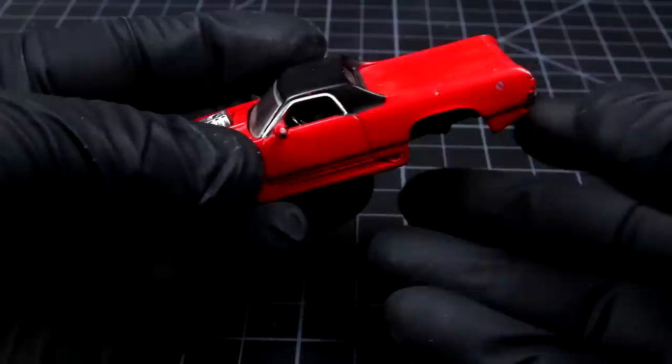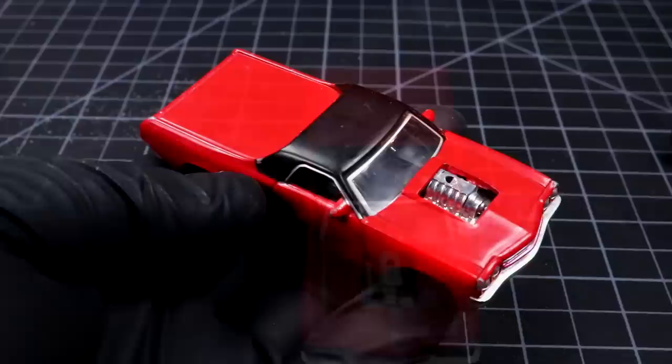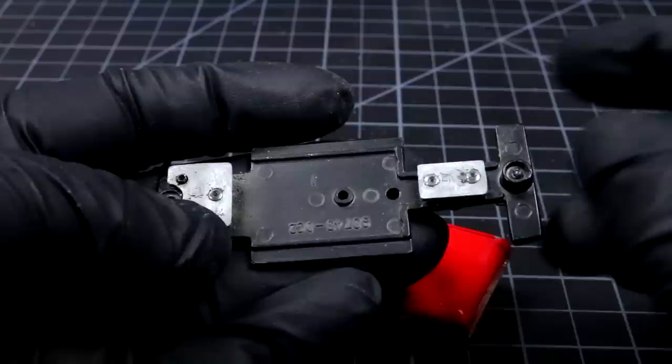Welcome back to Diecast Resurrection. Today we are working on this little 1970 Chevelle El Camino. The main problem with this unit is it's missing its little blower scoop and I don't have anything that's going to work for that, and it's a little bit banged up. So we're going to be working on this bad boy today. Let's get started.